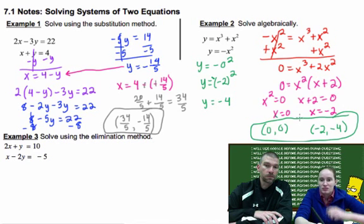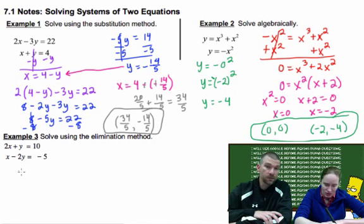So negative 2 when you square it is positive 4, but there's a negative in front, so that makes it negative 4. So there you go. So negative 2, negative 4 is our second point. You might think about going ahead and plugging that in and seeing if you feel like that's legitimately what your graph is showing you. If you want to, no big deal. It's good practice.